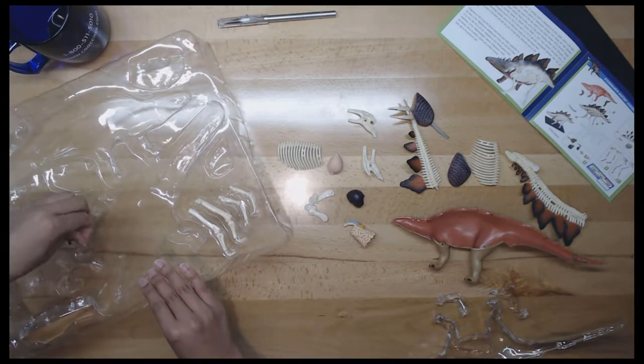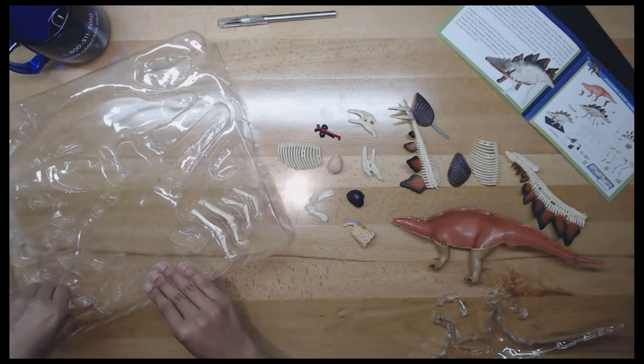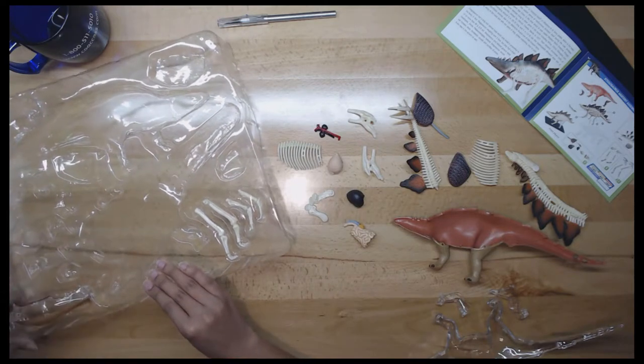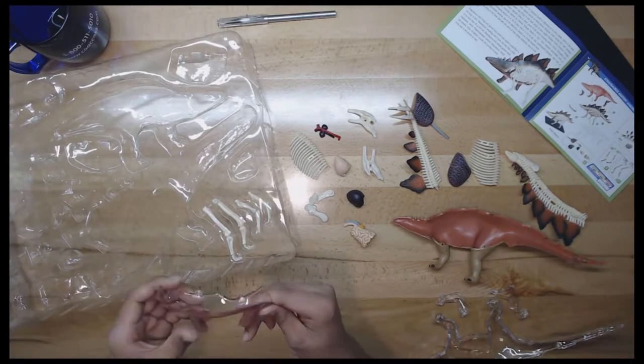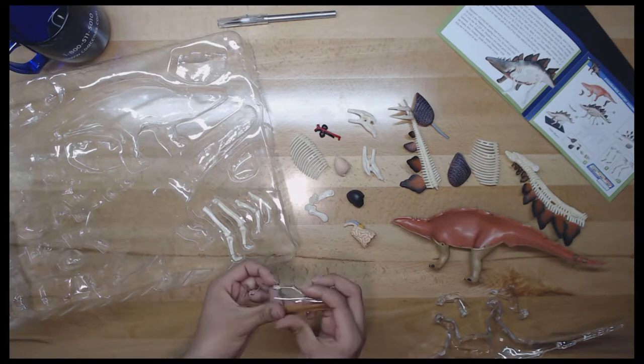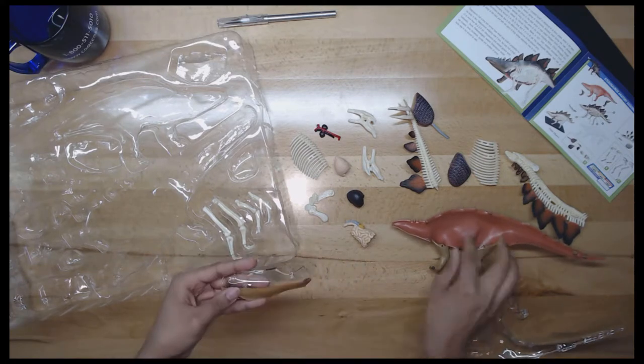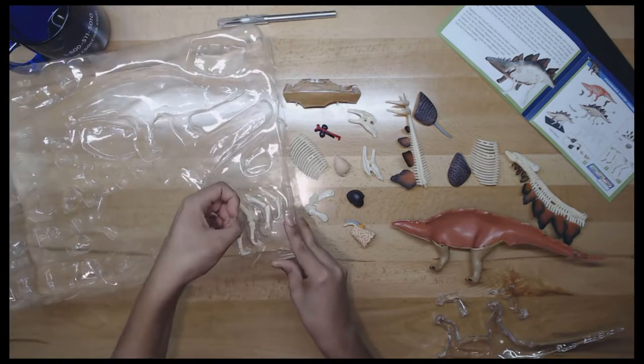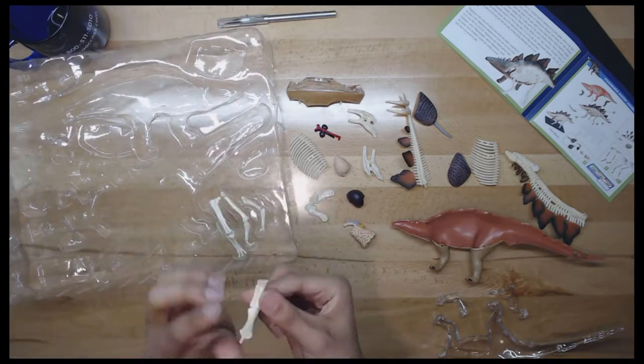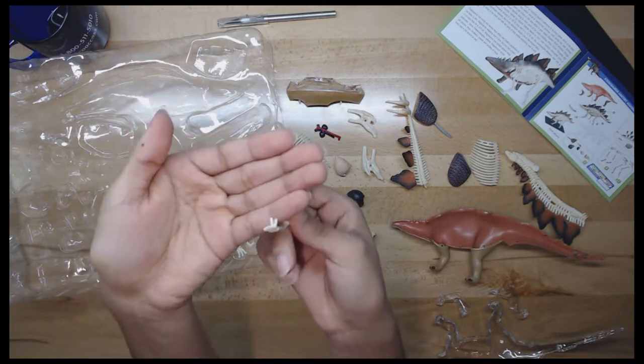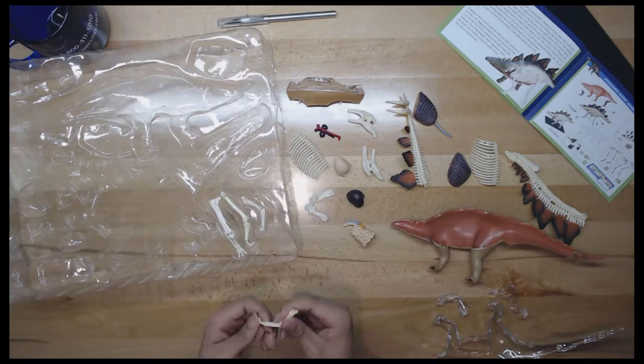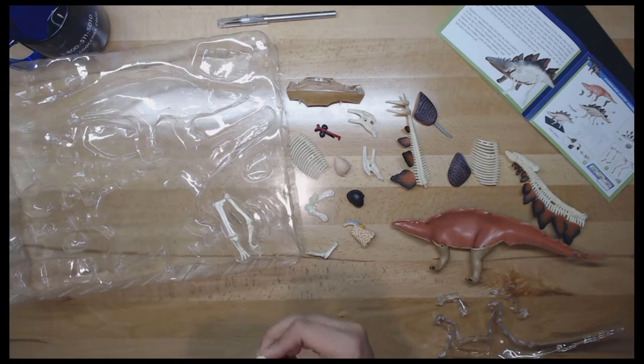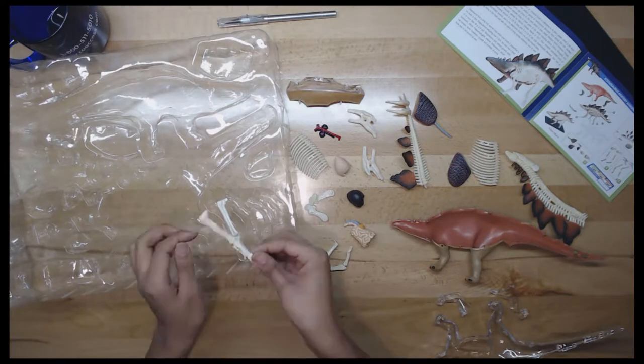First up is the skull. Stegosaurus had a very long and narrow skull which was small in proportion to its body. It had a small antorbital fenestra, the hole between the nose and eye, common to most archosaurs, including modern birds, though lost in extant crocodilians. Stegosaurus had a tiny brain at about 2.5 centimeters or one inch long.